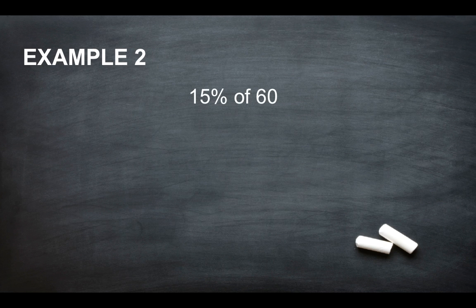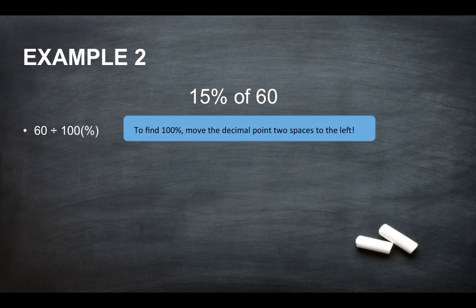Example 2, we've got 15% of 60. So the same method, 60 divided by 100%. Move the decimal point two spaces to the left, which will give you 0.6. 0.6 times 15 because that's the percentage you're trying to work out.